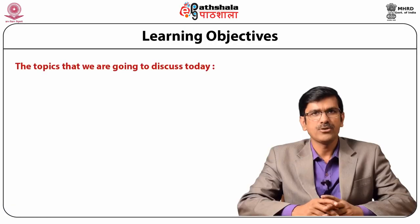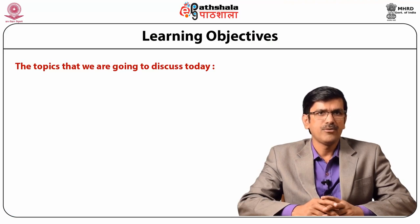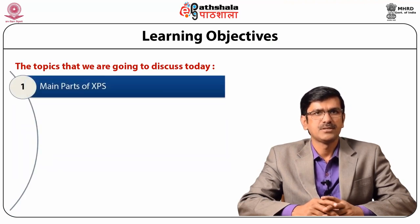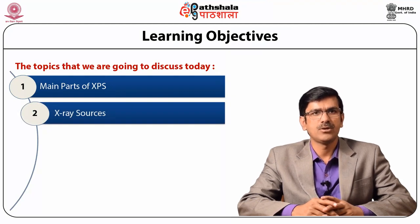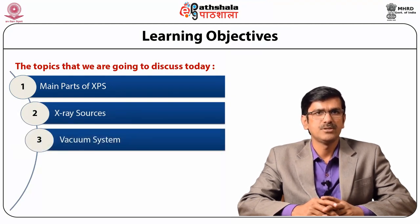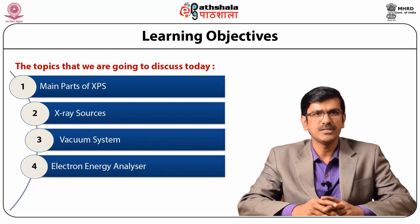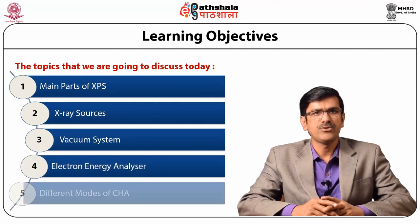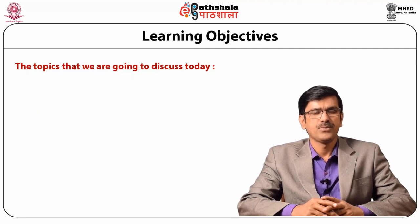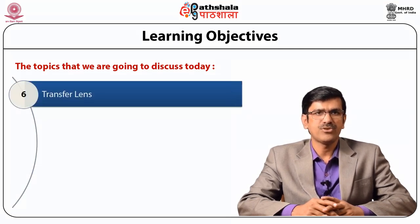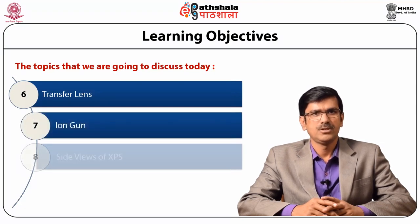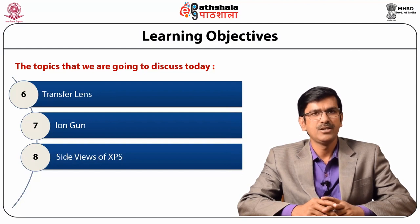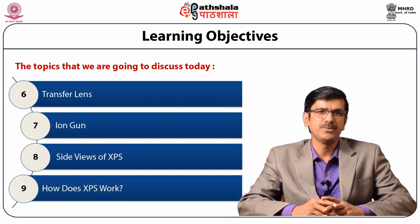The outline of the topic we are going to discuss today: number 1 is the main parts of the X-ray photoelectron spectrometer. Then we will discuss X-ray sources, vacuum systems, and electron energy analyzer. We will discuss different modes of CHA, transfer lenses, and ion guns. Side views of XPS will also be discussed, and we will discuss how XPS works.